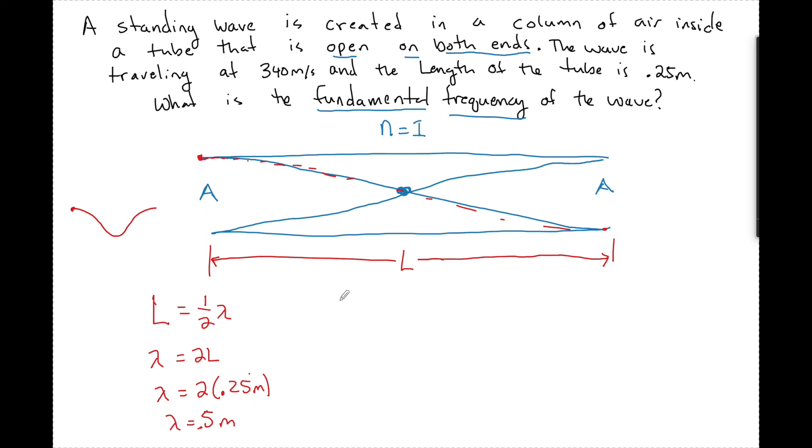Now from our reference table, V equals frequency times wavelength. I was given this as 340 meters per second, and I just found this to be 0.5 meters. So the frequency of this wave is just going to be V over lambda, 340 meters per second, divided by 0.5 meters. So the fundamental frequency, meaning when n is equal to one, is just going to be 680 hertz.